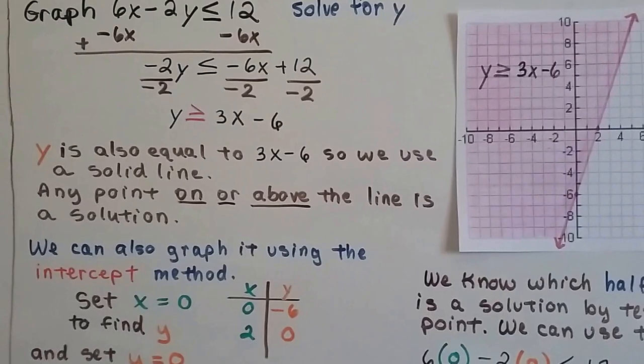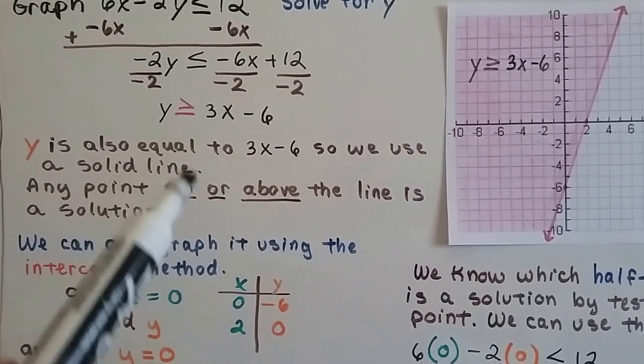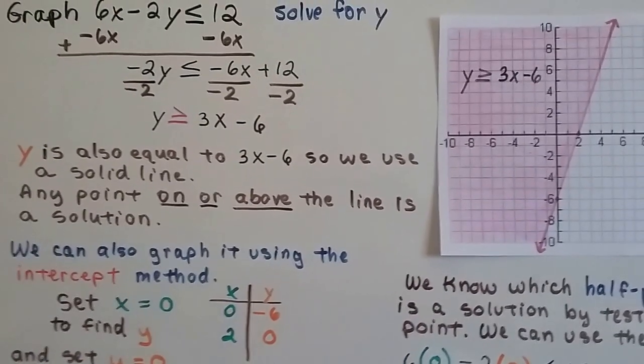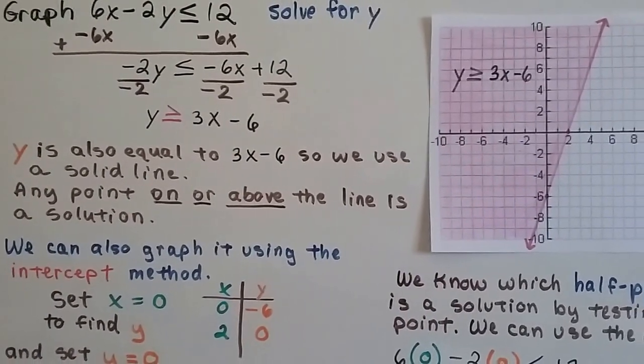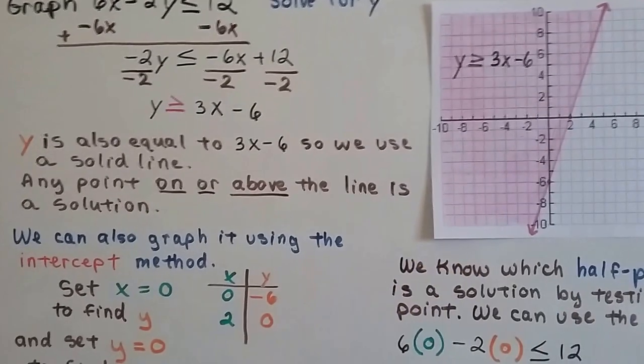y is also equal to 3x - 6. It's greater than or equal to, so we use a solid line because it's or equal to. It's included. Any point on or above the line is a solution, including the points on the line.